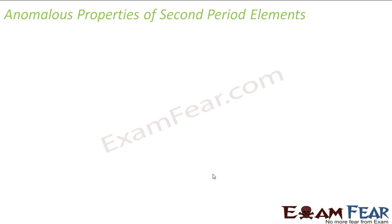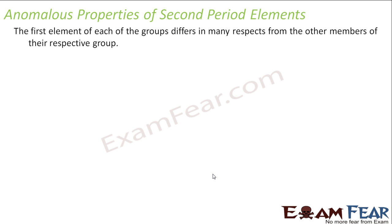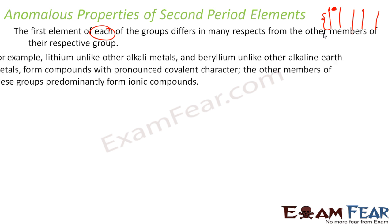Now let's understand the anomalous property of second period elements. It is observed that the first element in each group differs from the other elements in the group. They have some different properties.